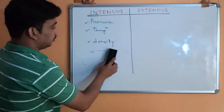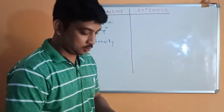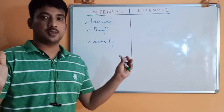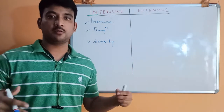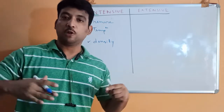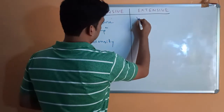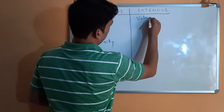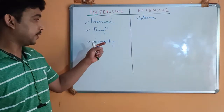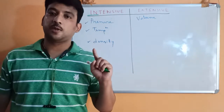But volume is an extensive property. If your mass increases — say, if you eat more and your mass increases — then your volume will also increase. So volume is an extensive property. Don't make this mistake: volume is extensive, density is intensive.